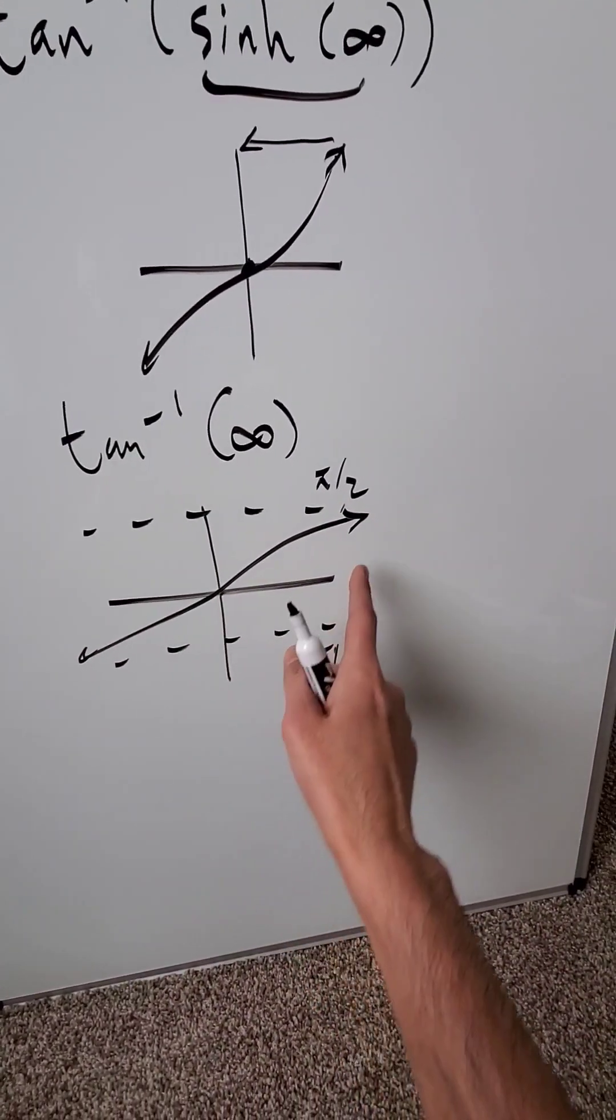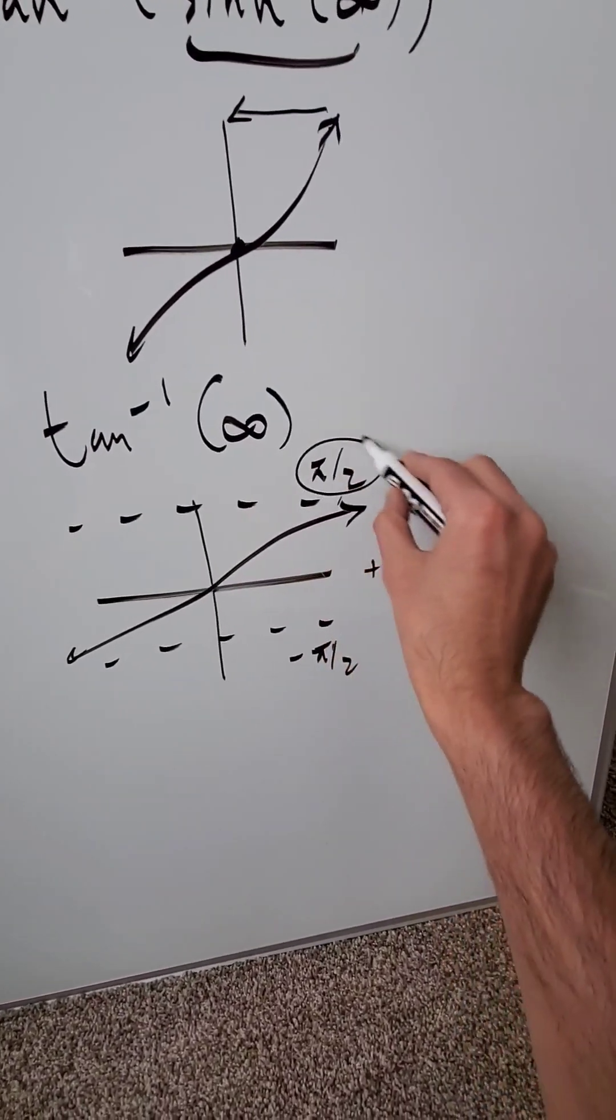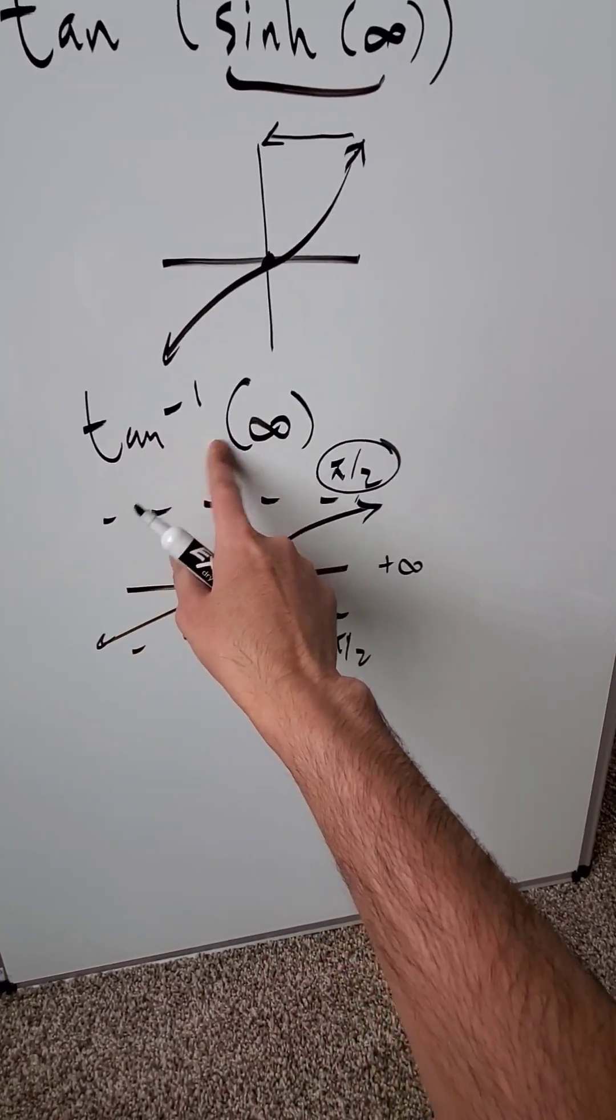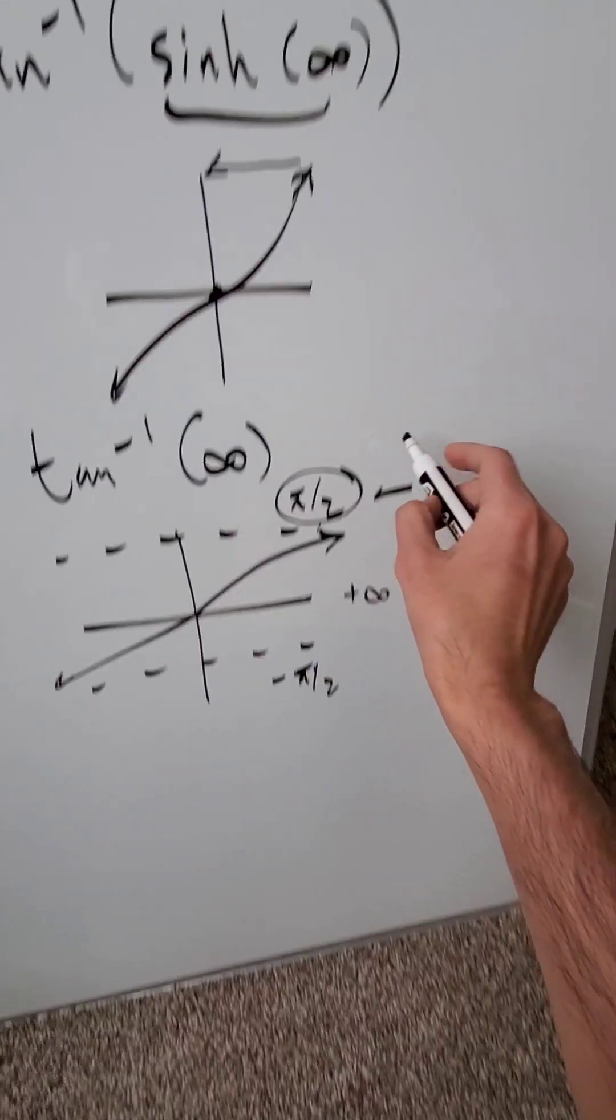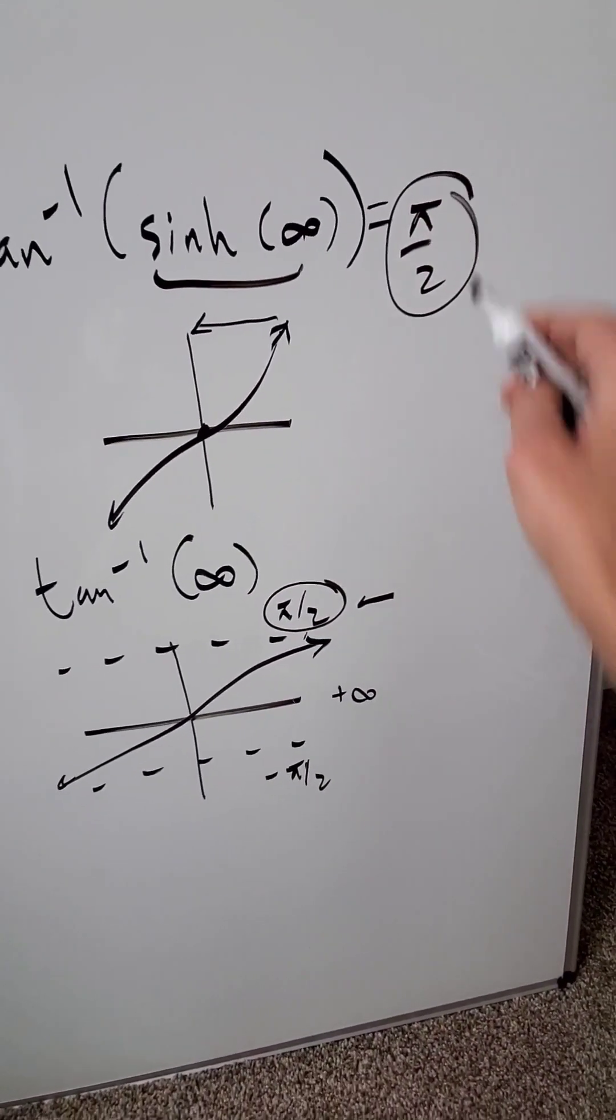When you're looking at this function, as you're approaching the direction of positive infinity, your function curve is approaching the horizontal asymptote. Therefore, inverse tan of infinity must be equal to pi over 2. This entire expression must evaluate to positive pi over 2 and that's your answer.